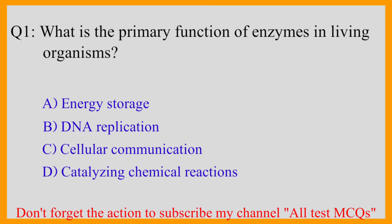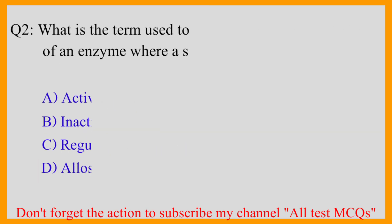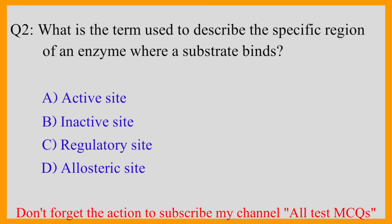Question number one: What is the primary function of enzymes in living organisms? The correct answer is option D — catalyzing chemical reactions. Question number two: What is the term used to describe the specific region of an enzyme...